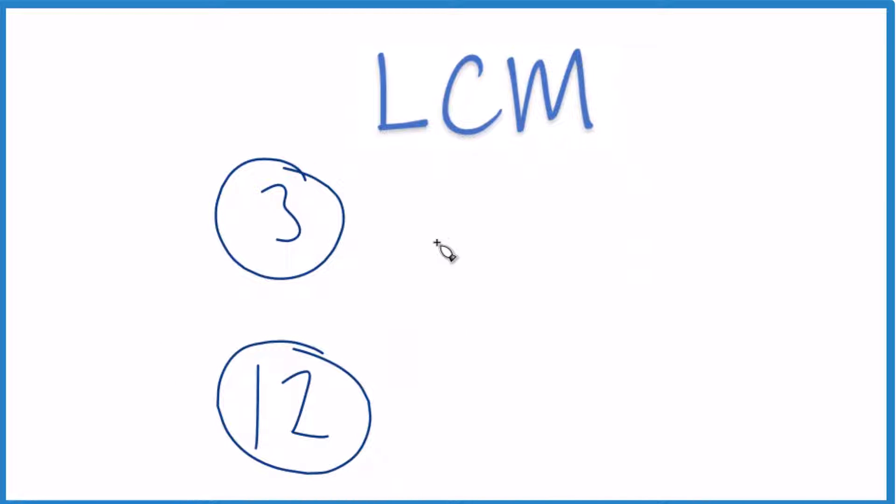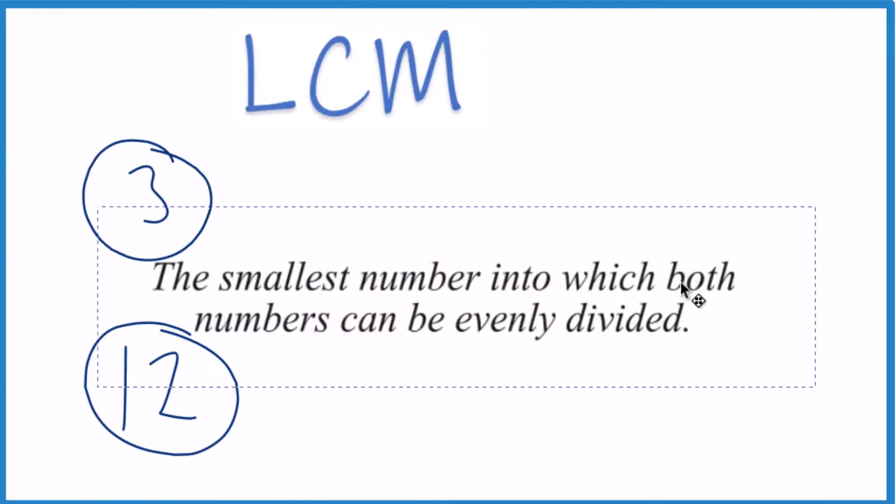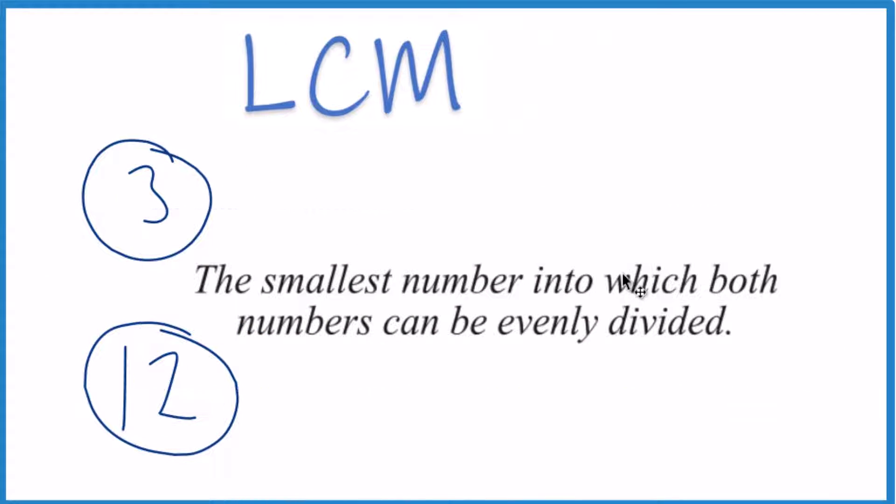When we're talking about the LCM, least common multiple, you can think about it as the smallest number into which both of these can be evenly divided. So 3 and 12 can be divided into that number.